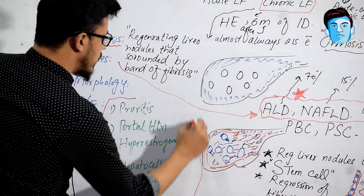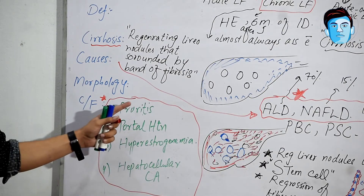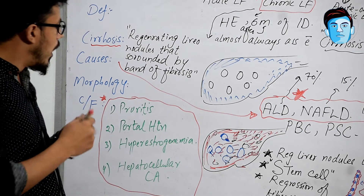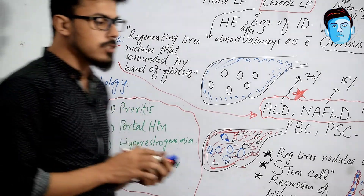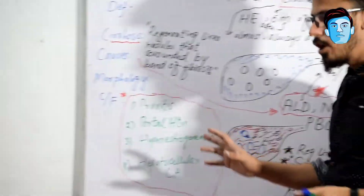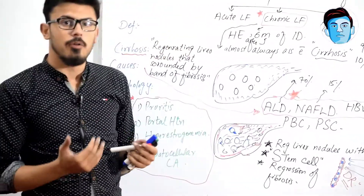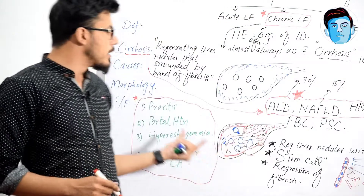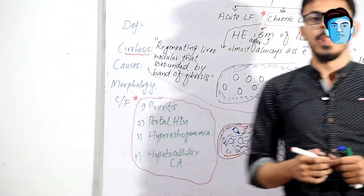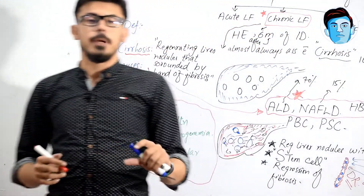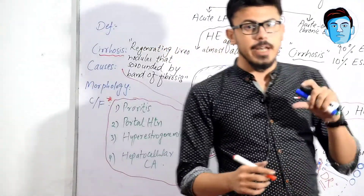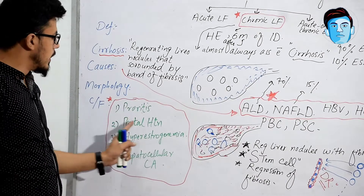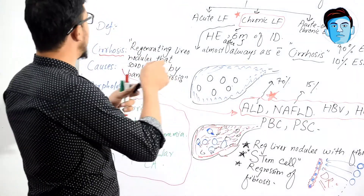Additional clinical features specific to chronic liver failure and cirrhosis include: pruritus, portal hypertension, hyperestrogenemia, and hepatocellular carcinoma. Pruritus means severe itching, which occurs due to bilirubin retention — there is an increased level of bilirubin that is not getting metabolized. Sometimes this pruritus is so severe that the patient is unable to tolerate the itching, and for that reason the patient may go for liver transplantation.